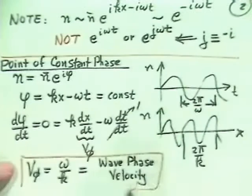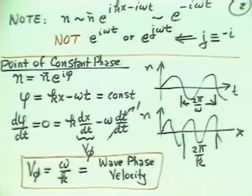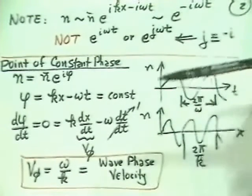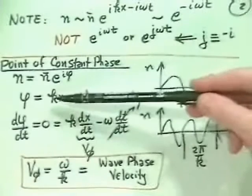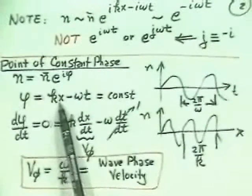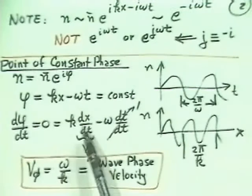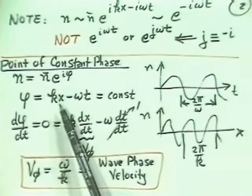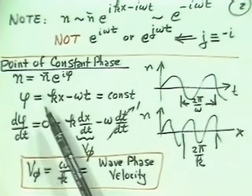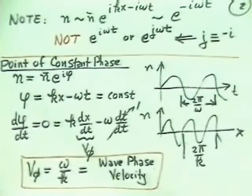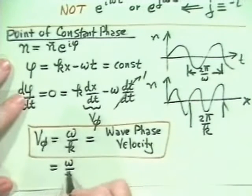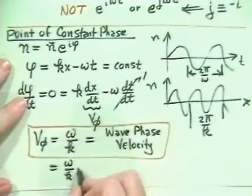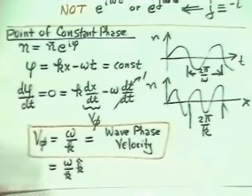In one dimension the phase velocity is ω/k. In three dimensions, with k·x in the phase, taking the time derivative gives velocity dotted into k. The phase velocity in three-dimensional space is then (ω/k)·k̂ — that is, in the direction of the k vector, which is the direction of wave propagation.